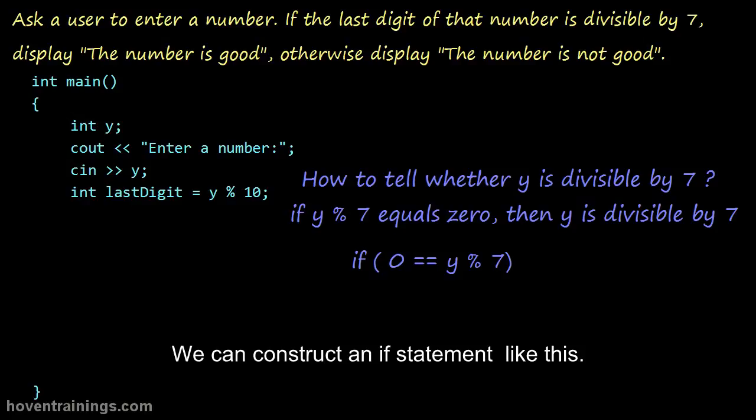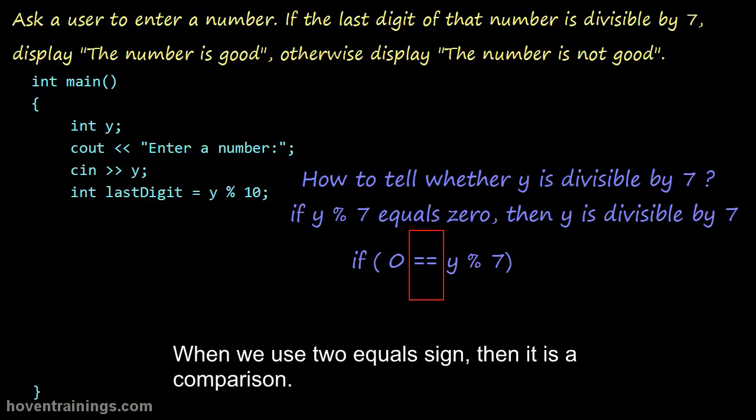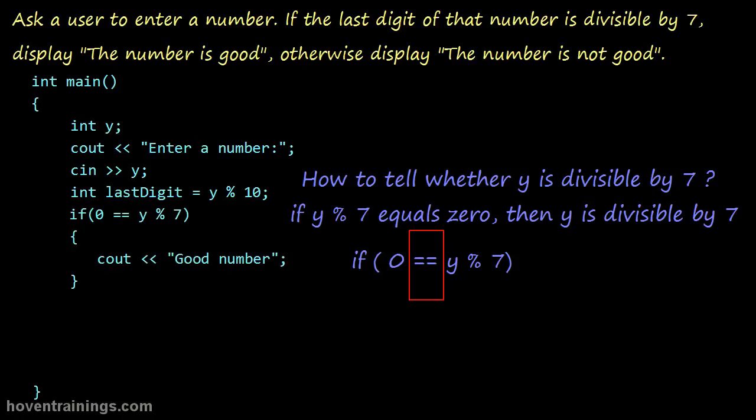We can construct an if statement like this. If 0 compares equal to y modulus 7. This double equal sign is for comparison. A single equal sign is for assignment. When we use two equal signs, then it is a comparison. This is how we can write our condition in an if statement.